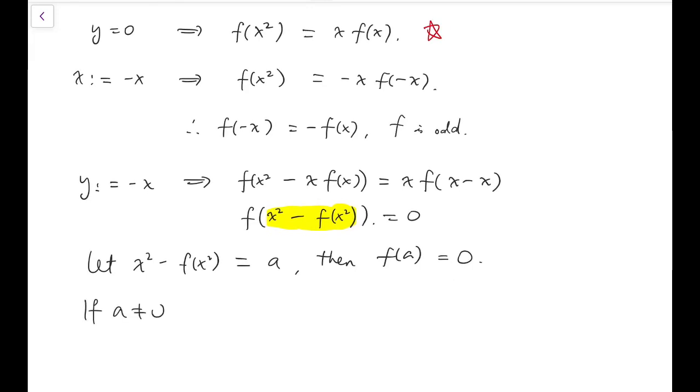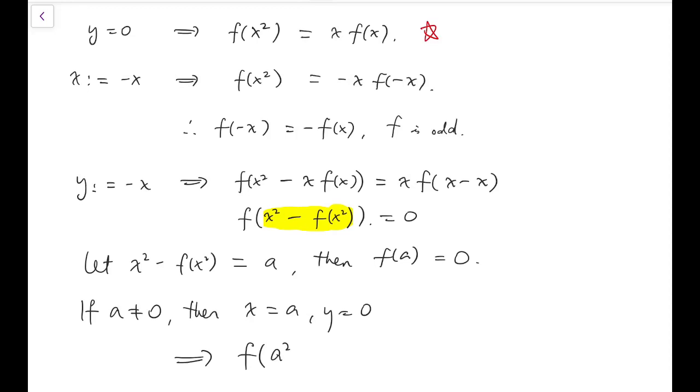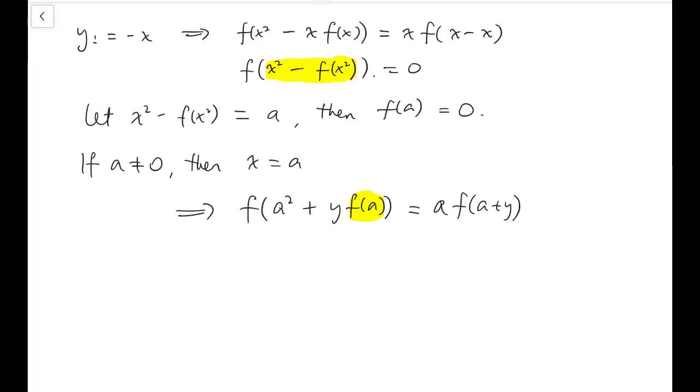And then the other term will already vanish. So a squared plus y f of a equals a times f of a plus y. So this thing will equal to zero. And so we don't even need y to be zero to make this vanish. So f of a squared equals a times f of a plus y.